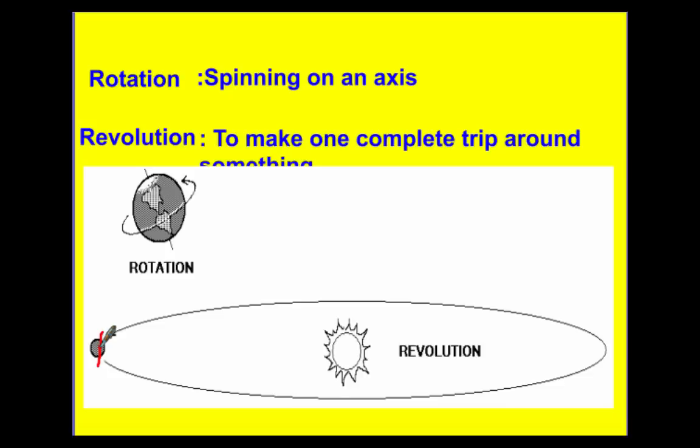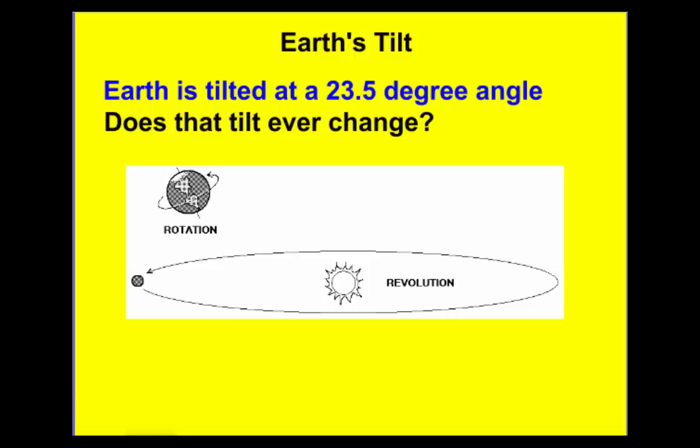Revolution is just making one complete trip around something. When we talk about revolution for us, we're talking about a year — one complete trip around the Sun. The Moon also does a revolution; we call it a lunar cycle, and that's the Moon revolving around us.